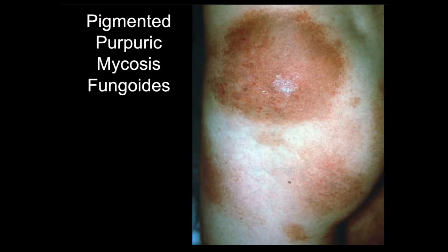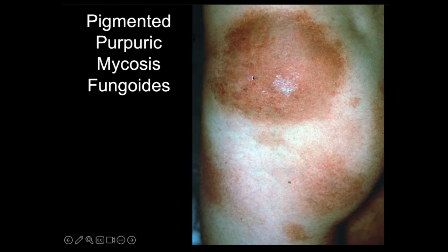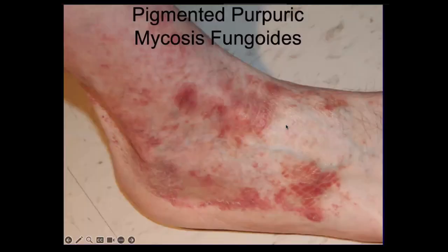In another variant, we might see little pinpoint areas of bleeding within lesions — tiny bright red spots within patches. That's called pigmented purpuric mycosis fungoides, meaning bleeding under the skin. It tends to appear in areas of sun protection. Here we see it on the ankle of a patient with scaly patches and pinpoint bleeding within. The feet and hands are also common areas of mycosis fungoides involvement.